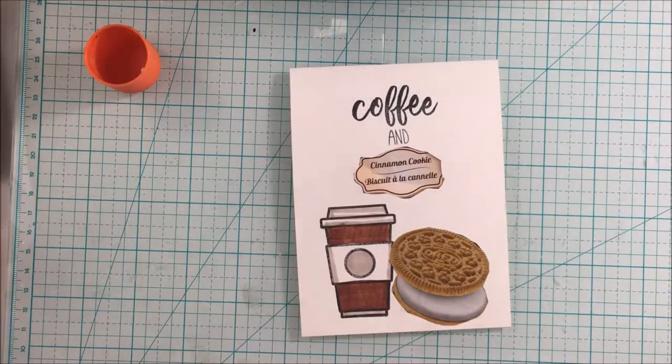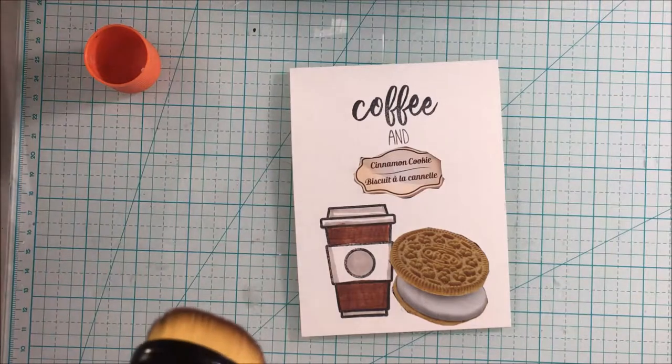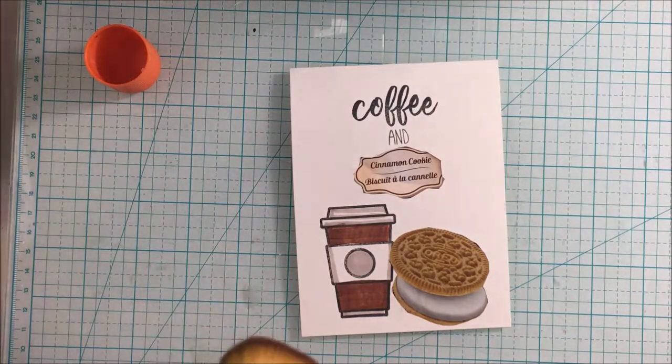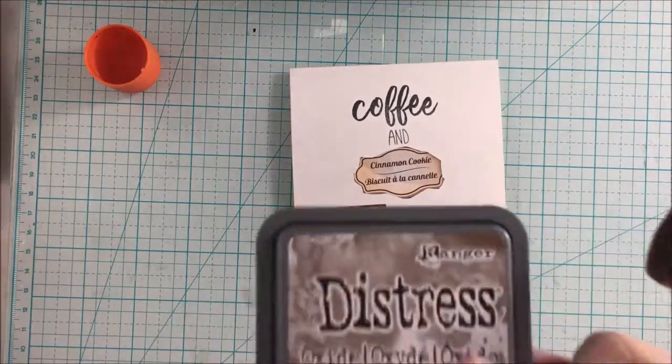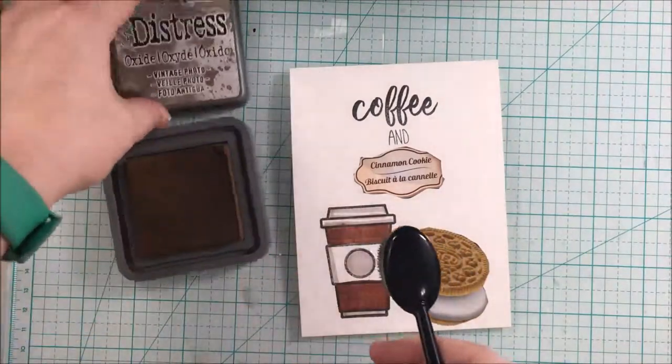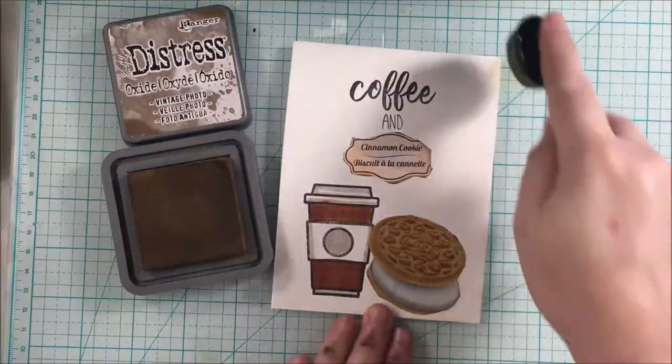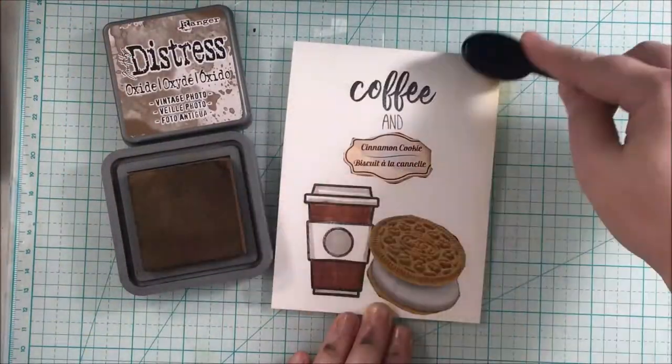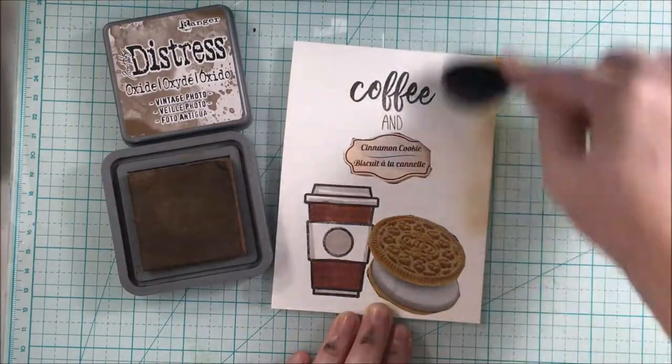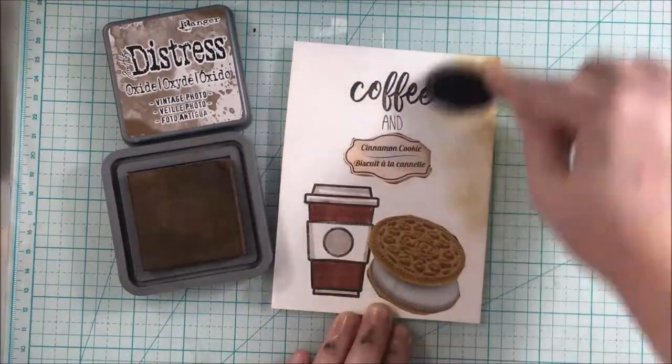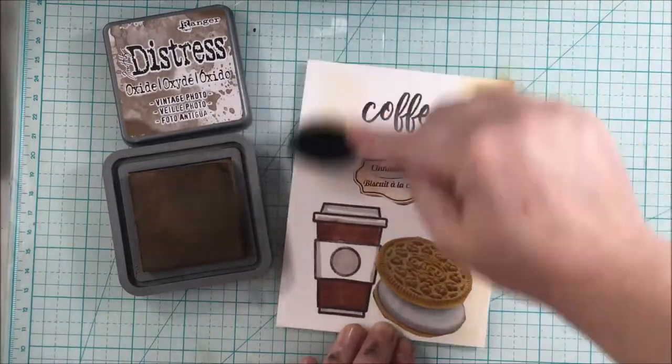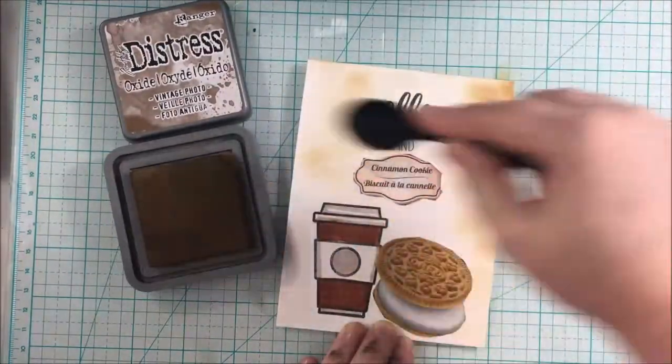You could make birthday cards with the birthday cake flavor. You could just go to town and have different fun with the different packaging. Pick your favorite one or you know somebody really likes mint Oreos, make them a card.